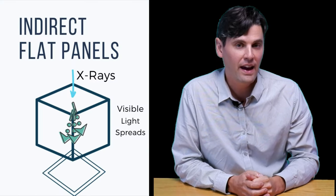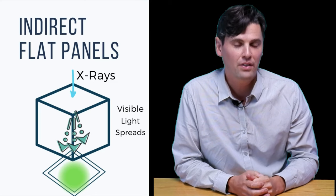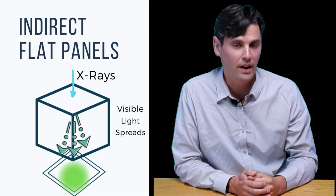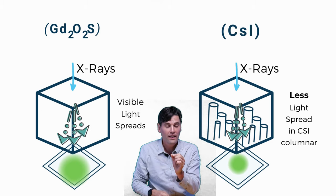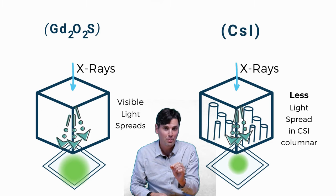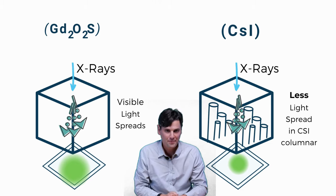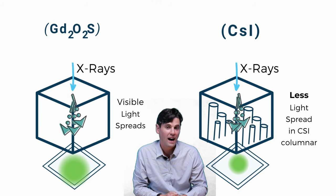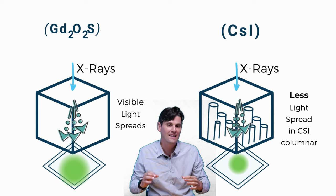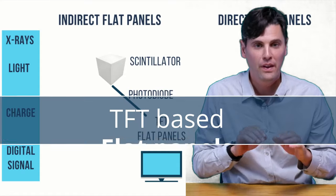That isotropic emission blurs the signal. An alternative that produces less blurring is cesium iodide — a crystalline structure where the crystals are grown in columns. Because the crystals are grown in columns, when the x-ray interacts, the visible light pings back and forth between the sides of the column rather than spreading. This gives higher spatial resolution because there's less light spreading.